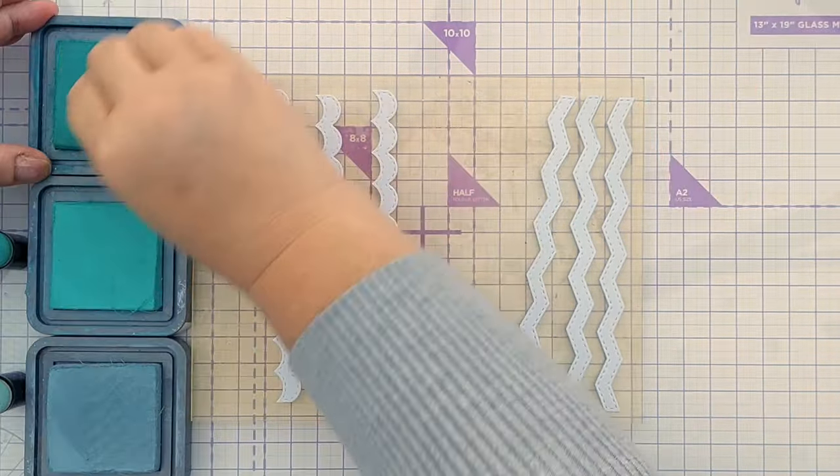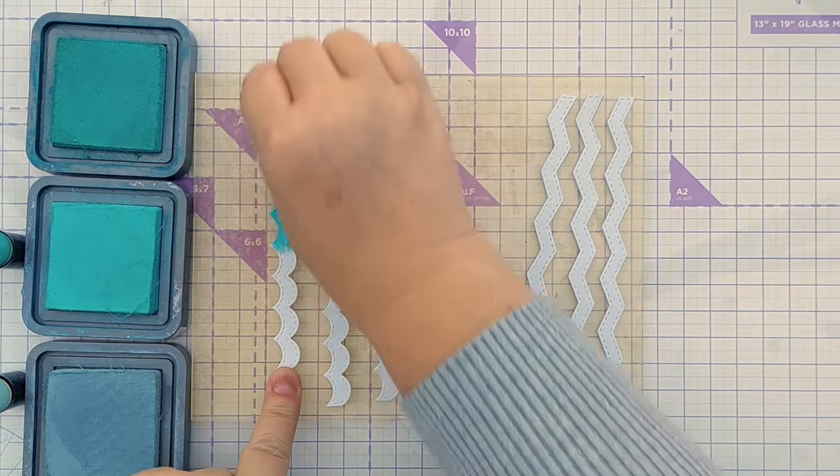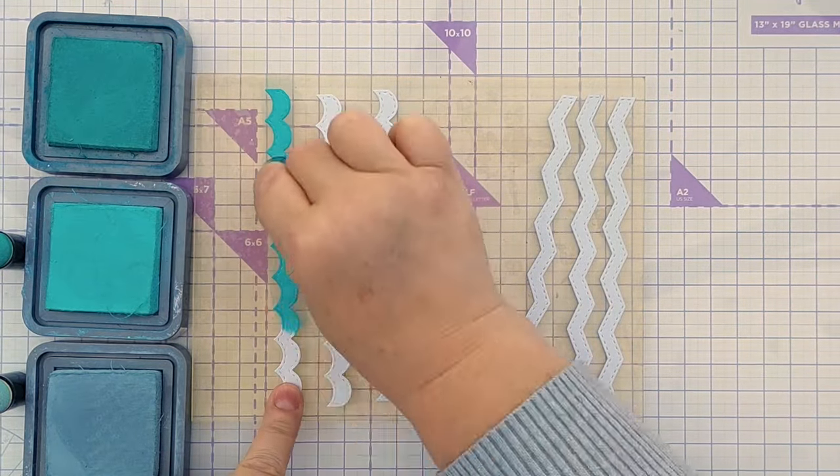For my scallops I've got Peacock Feathers, Salvaged Patina, and Speckled Egg.